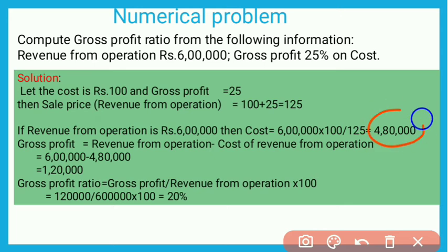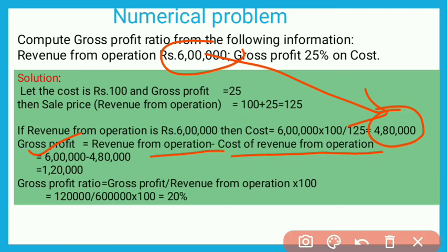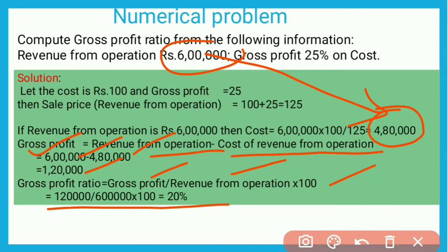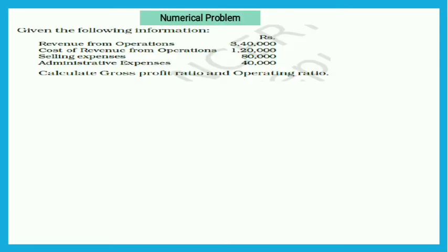Now we deduct cost from revenue from operations to get gross profit. Gross Profit = Revenue from Operations − Cost of Revenue from Operations = ₹6,00,000 − ₹4,80,000 = ₹1,20,000. Gross Profit Ratio = ₹1,20,000 ÷ ₹6,00,000 × 100 = 20%. This is how we calculate gross profit ratio.